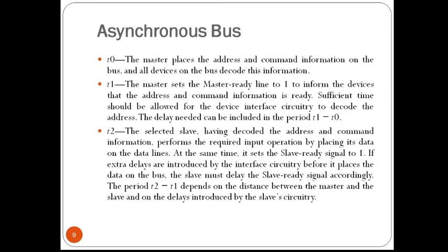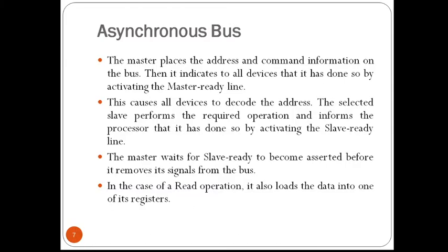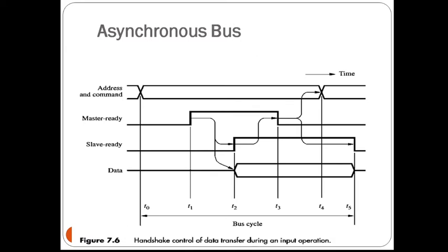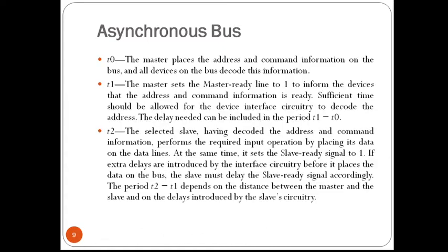The handshake protocol proceeds as follows. First, the master places the address and command information on the bus and activates the master ready line to indicate it has done so. This causes all devices on the bus to decode the address. The selected slave performs the required operation — whether read or write — and informs the processor that it has done so by activating the slave ready signal.